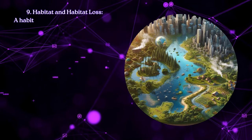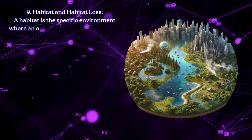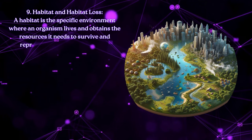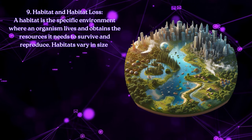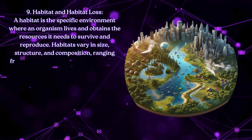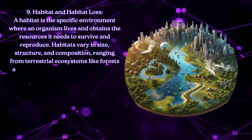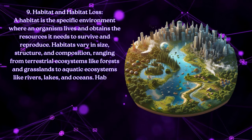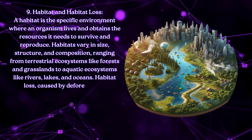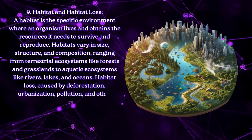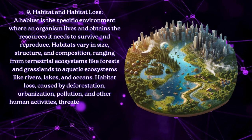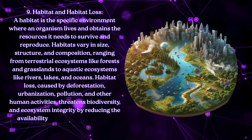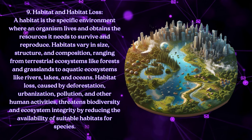Habitat and habitat loss: A habitat is the specific environment where an organism lives and obtains the resources it needs to survive and reproduce. Habitats vary in size, structure, and composition, ranging from terrestrial ecosystems like forests and grasslands to aquatic ecosystems like rivers, lakes, and oceans. Habitat loss caused by deforestation, urbanization, pollution, and other human activities threatens biodiversity and ecosystem integrity by reducing the availability of suitable habitats for species.